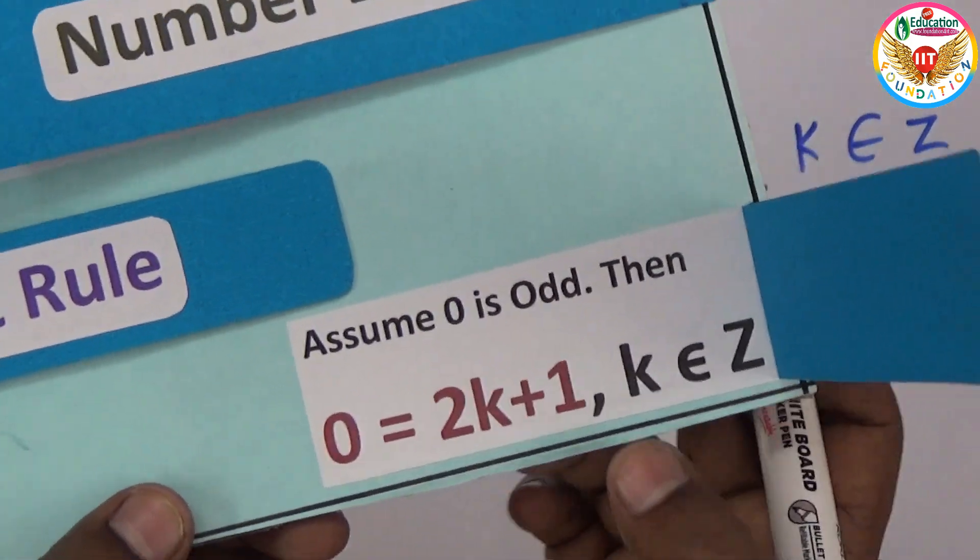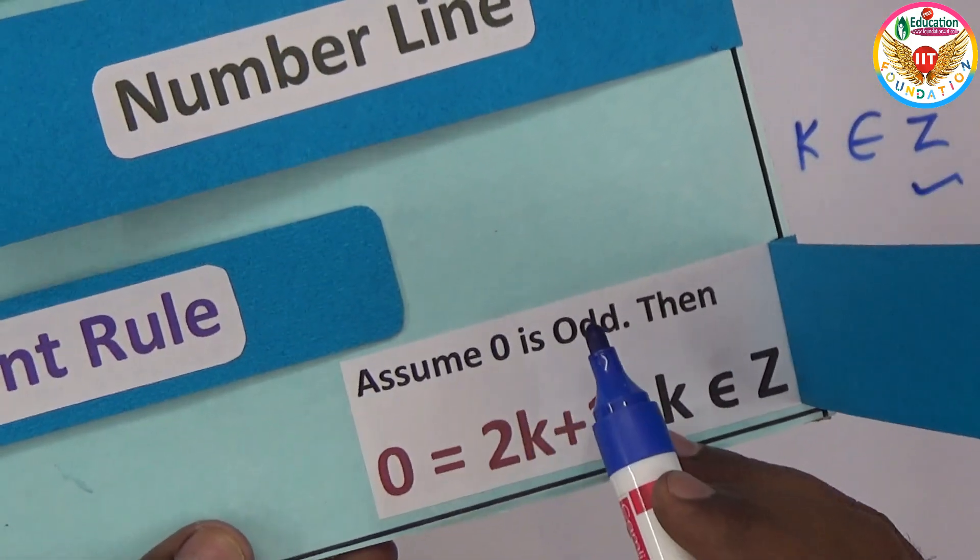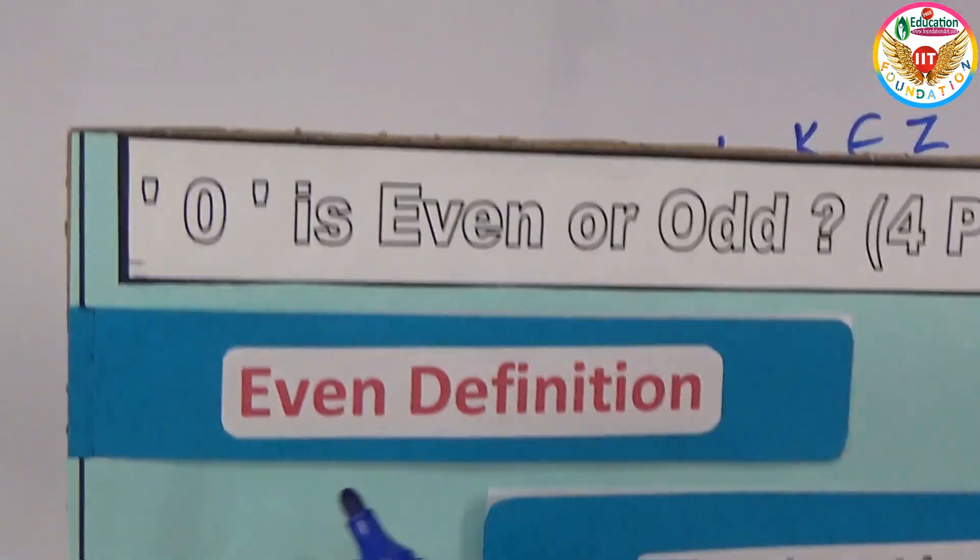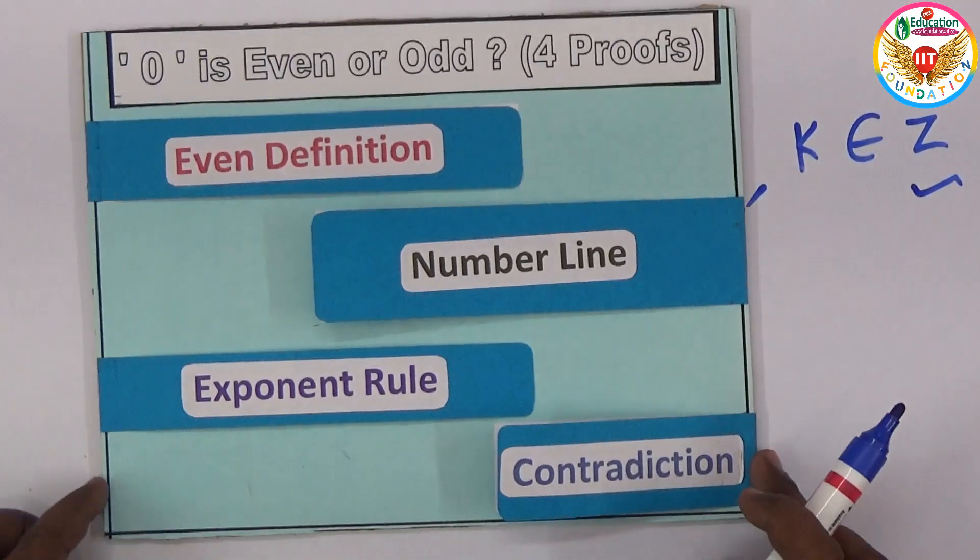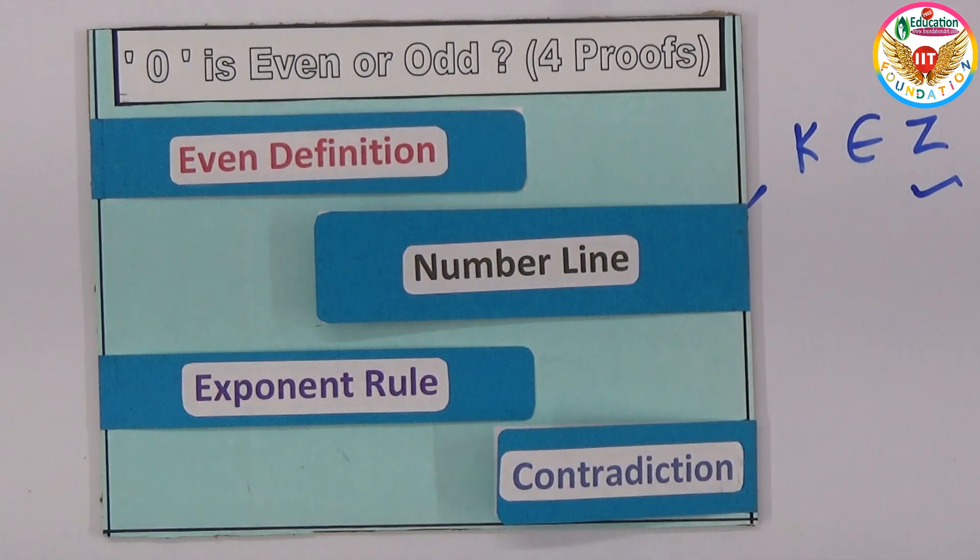That means what we are assuming is wrong. We assumed zero is odd, so because that is wrong, indirectly, zero is even. So these are the four simple proofs to show exactly that zero is an even number.